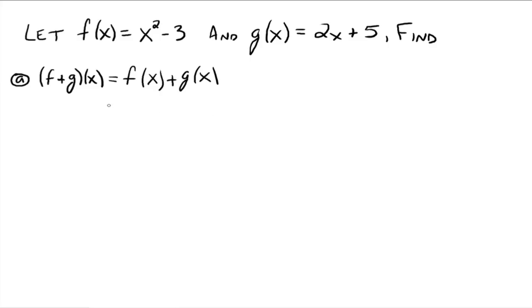Alright, and then line up your equal sign. Say, alright, what's f of x? Well, f of x is x squared minus 3. Alright, then we have plus. And then we say, alright, what's g of x? Well, g of x is 2x plus 5. And we just add these together. And really what this is pulled down to is just add like terms. So you have x squared plus 2x plus 2.